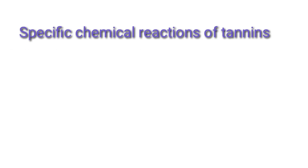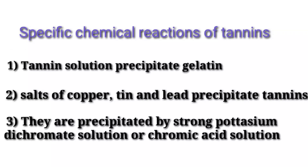Coming to specific chemical reactions of tannins: tannin solution precipitates gelatin, and tannins are precipitated by salts of copper, tin, and lead. They are also precipitated by potassium dichromate solution or chromic acid solution.